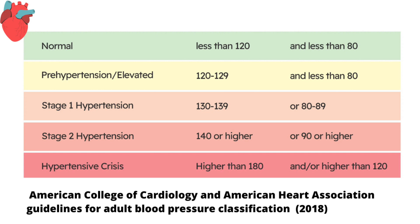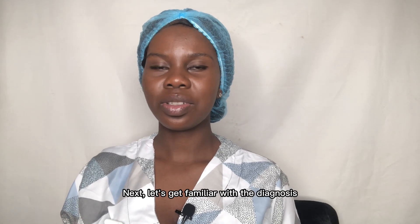Stage 1 hypertension is classified as 130 to 139 systolic blood pressure or 80 to 89 diastolic. Stage 2 hypertension is classified as 140 or higher systolic and 90 or higher diastolic. Hypertensive crisis is classified as systolic blood pressure higher than 180 mmHg and/or diastolic blood pressure higher than 120 mmHg.